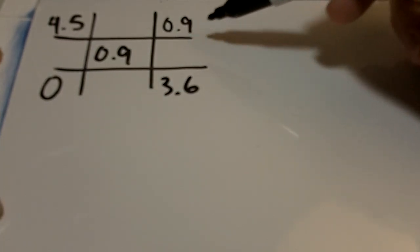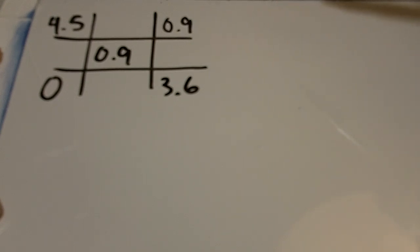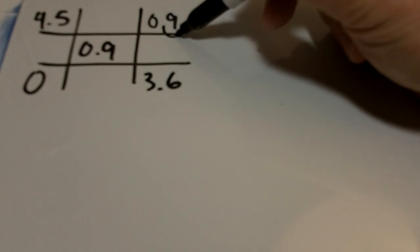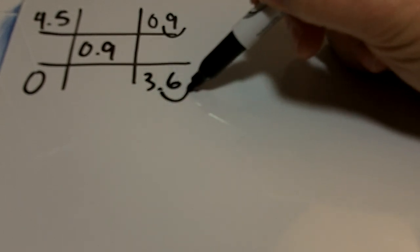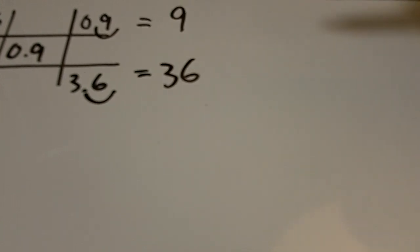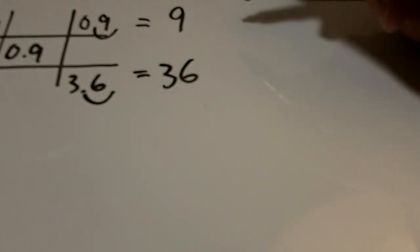So what that means is 0.9 parts of 4.5% and 3.6 parts of 0 which is the water. However, since this is a ratio which is just like a fraction, you can move this decimal over one place as long as you do it on the top and the bottom. So now what we get is 9 and 36.